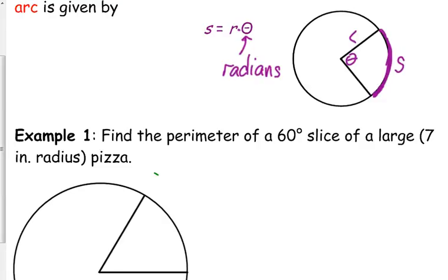S equals R times theta. S is the arc length. R is the radius. Theta is in radians.